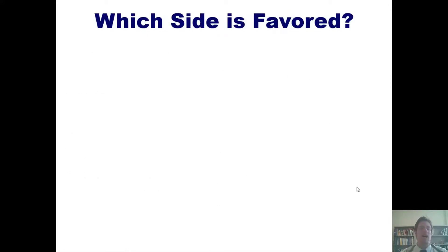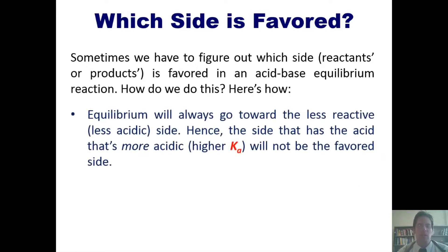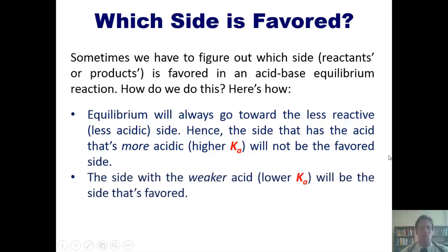Now a different subject: which side is favored in an acid-base equilibrium reaction? We have to figure out whether reactants or products are favored. Equilibrium will always go toward the less reactive, or less acidic, side. The side that has the more acidic acid — the one with the larger Ka — will not be the favored side. The side with the weaker acid, which has the smaller Ka value, will be the side that is favored. In any equilibrium reaction, equilibrium drifts toward the more stable, less reactive side.